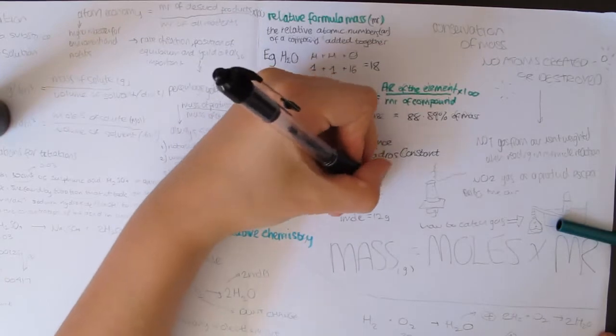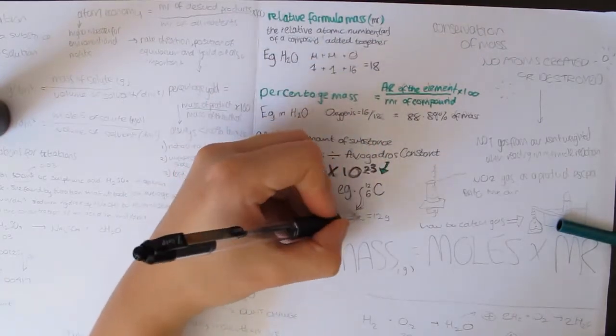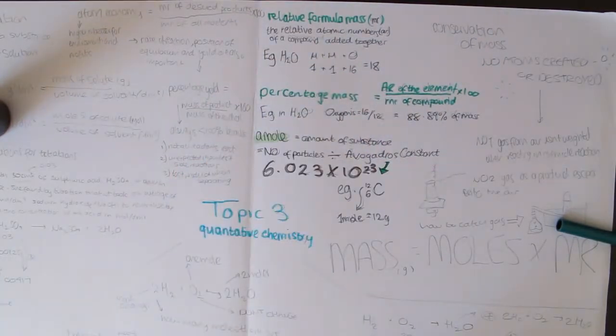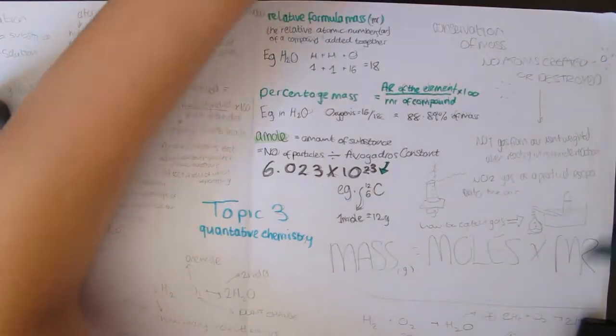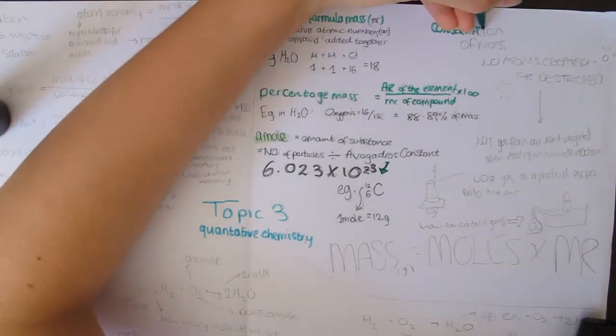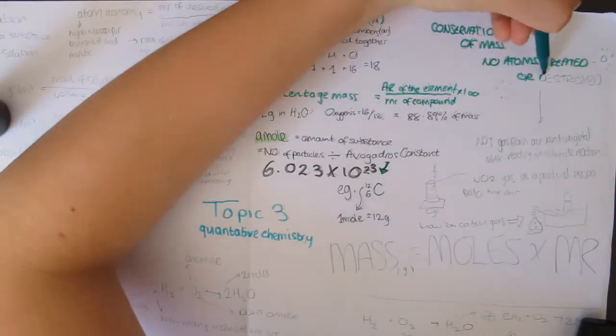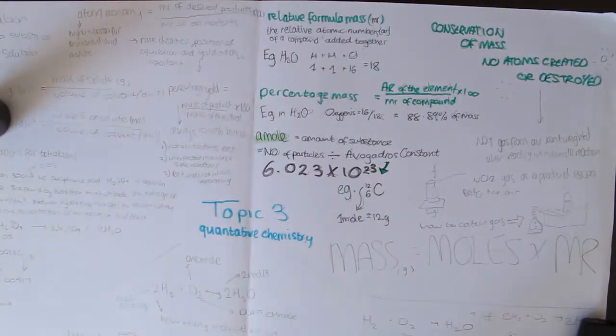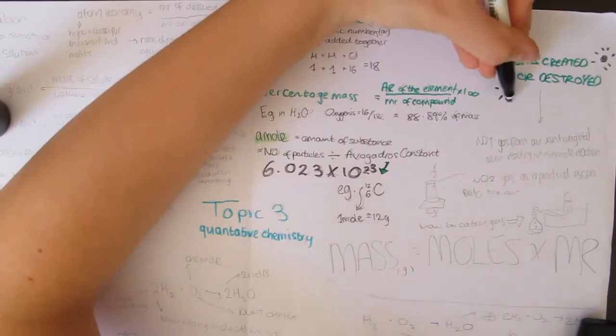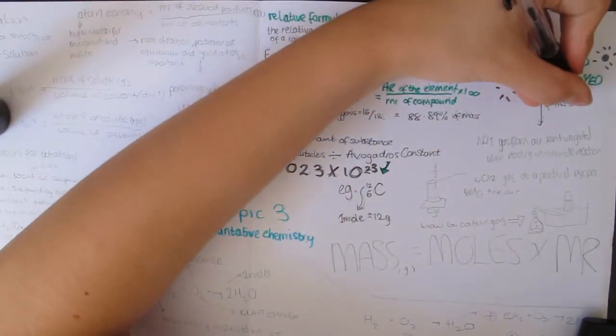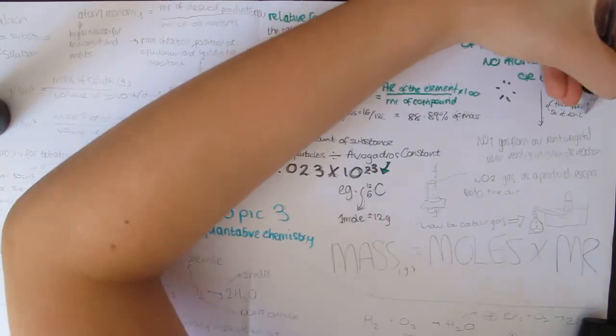For example, carbon's AR is 12, so one mole of carbon is 12 grams exactly, and carbon dioxide's MR is 44, so one mole of CO2 is 44 grams. This means 12 grams of carbon and 44 grams of CO2 both contain the same number of particles, one mole, or 6.023 times 10 to the 23.